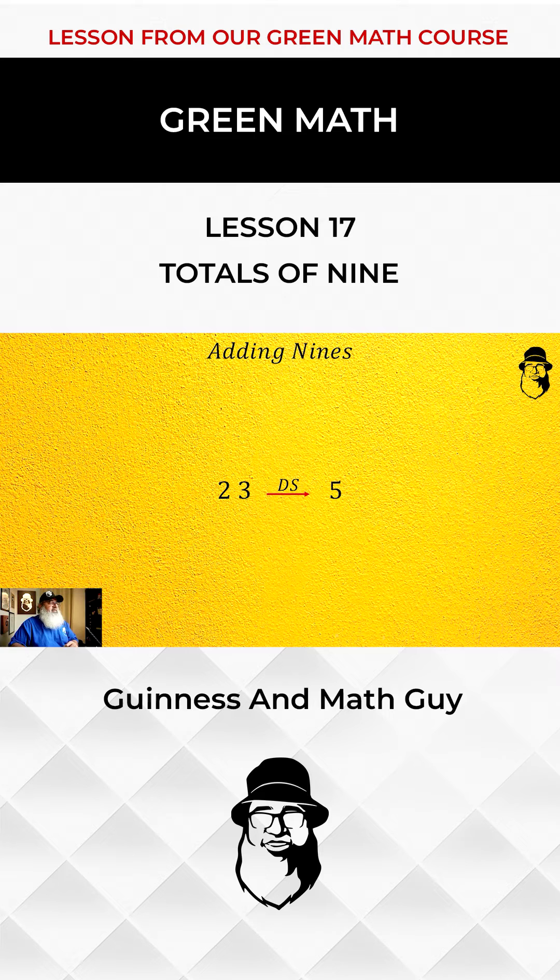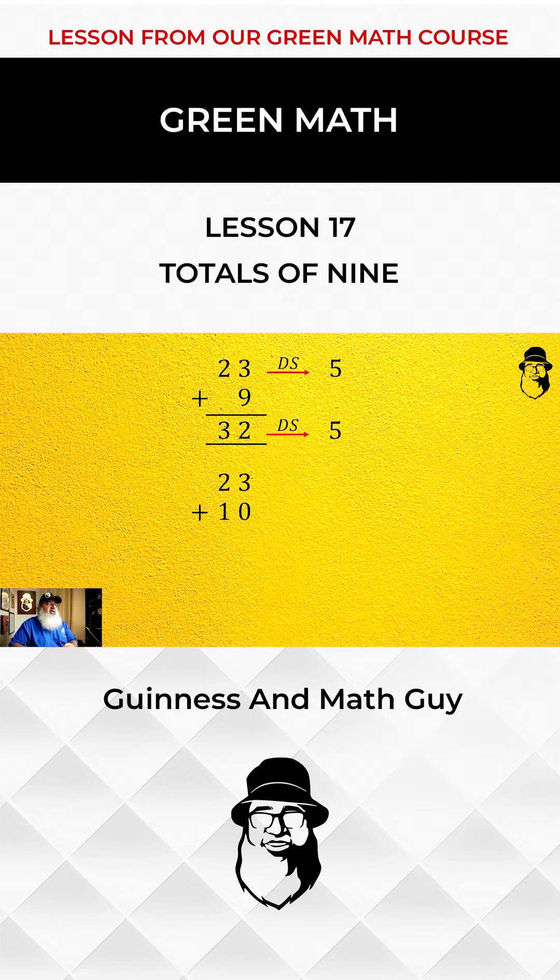And why is it that adding 9 to a number does not change its digit sum? Here we can see the digit sum is same as 5. The answer is that we can add 9 by adding 10 and taking 1 away.